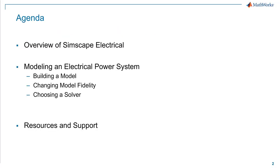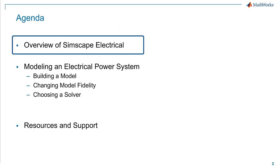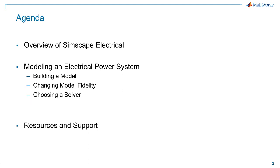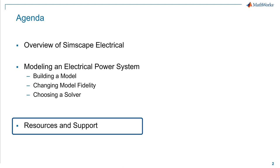So this is our agenda. First, I will give you an overview of SimScape Electrical — what it is and why we need it. Next, I will build a model of a simple electrical power system with SimScape Electrical to cover some essentials. We will also cover topics like how to choose a solver or how to change the model capabilities. Finally, I will share some resources and technical support to help you get started.